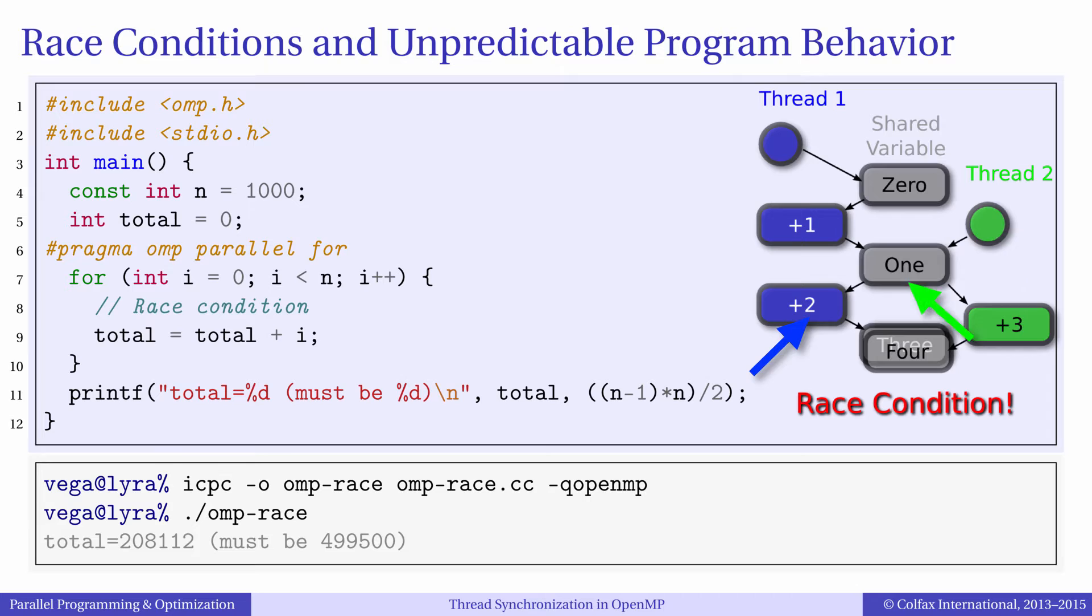Other times while thread 1 was incrementing the variable, thread 2 read the old value and incremented it as well. The result will be that when the threads write out their results, the result of one of the threads will be overwritten by the result of the other thread. In this case the net total will be wrong.